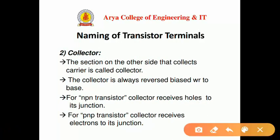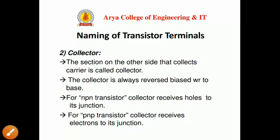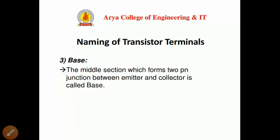The next terminal is the collector. The section on the other side that collects the carriers is called the collector. The collector is always reverse biased with respect to the base. For NPN, the collector receives holes at its junction, and for PNP, the collector receives electrons at its junction. The middle section — the base — forms two PN junctions between the emitter and collector.